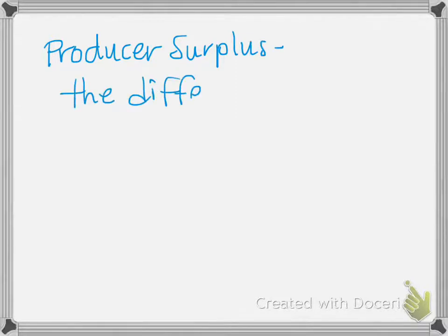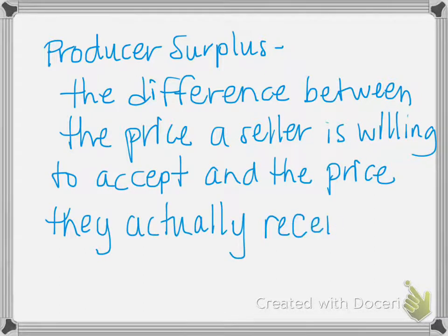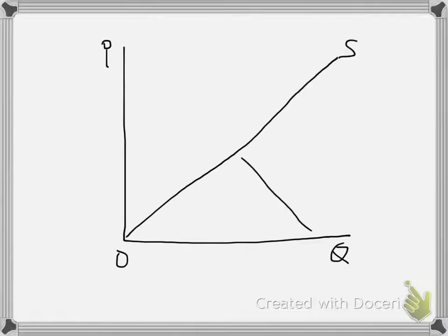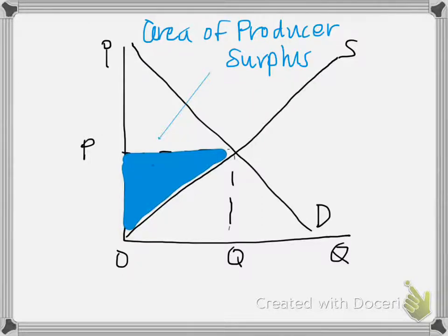Producer surplus is the difference between the price that a seller is willing to accept and the price they actually accept. For sellers, they're always trying to get a higher price — this is the law of supply. If there is a market price higher than the price they were willing to accept, we call that producer surplus. On the graph, the area of producer surplus is shaded in blue — it's a triangle below the equilibrium price to the supply curve, all the way down to the price axis. Sellers would have been willing to sell at prices lower than the equilibrium price, but when they got to market, the price was higher, benefiting them in terms of more revenue than expected and, hopefully, greater profits.